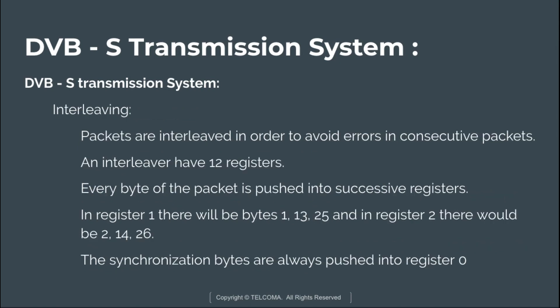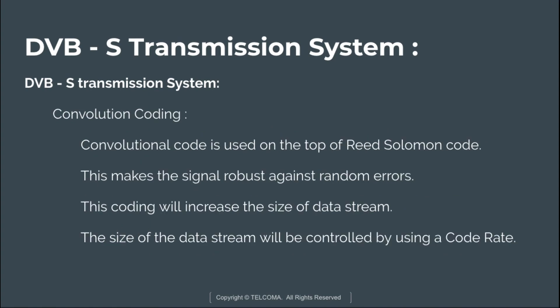Next is interleaving. Packets are interleaved in order to avoid errors in consecutive packets. The interleaver has 12 registers; every byte of the packet is pushed into successive registers. In register 1 there will be bytes 1, 13, 25, and in register 2 bytes 2, 14, 26. Synchronization bytes are always pushed into register 0. In this way, packets are interleaved in the DVB-S transmission system.